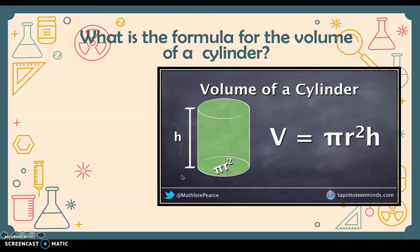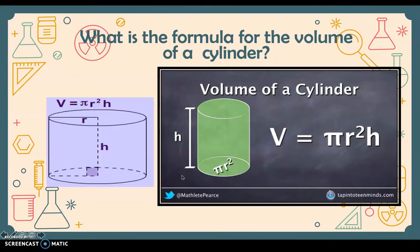The link to this video is also in the description. In the video we conclude that the formula to get the volume of a cylinder is the area of the base times the height, because volume is area times height. So we have pi r squared times height.